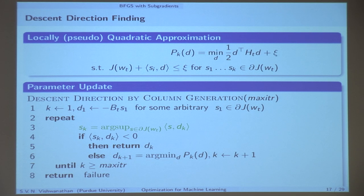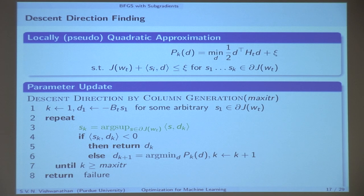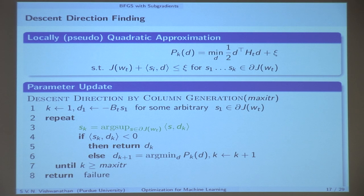For the hinge loss, you can say even more than the subdifferential set being convex: the subdifferential set is always a polytope. When you give a direction, the worst-case subgradient typically occurs at one of the corners of the polytope.